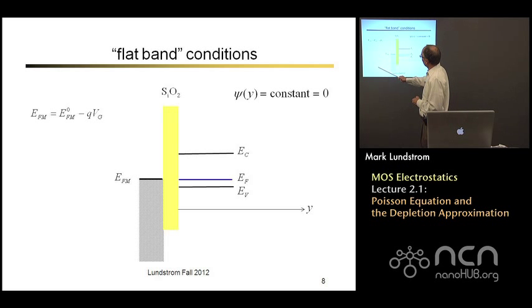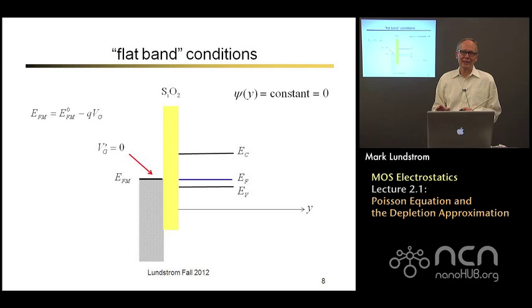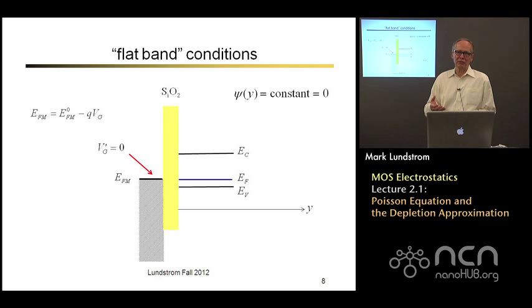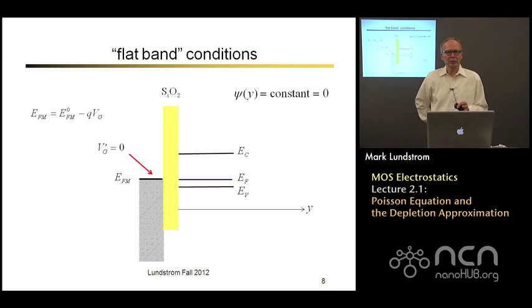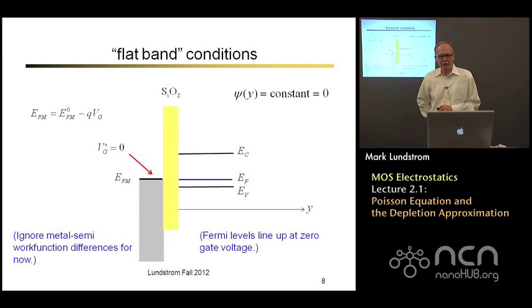Now, in general, a voltage will change that. In an ideal structure, if I apply zero voltage, the bands will line up and be flat. But this rarely occurs in practice — metals have different work functions. What Vg prime means is that in practice I'm going to have to apply some voltage in order to line the Fermi levels up and make the bands flat, and that's called the flat band voltage. For now we're going to assume that just magically happens at zero gate voltage because we have the right metal with the right work function. So flat band conditions in the device will be our starting point, and we're ignoring metal-semiconductor work function differences for now.